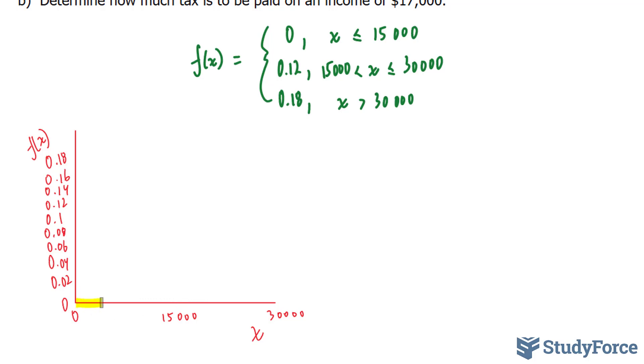So we're going to use this highlighter here just to show that it ranges from $0 to $15,000. And since it is equal to $15,000, we will put a solid dot right there. And we're told that you will pay 12% between $15,000 less than x. And we're going to denote that with a hollow circle.